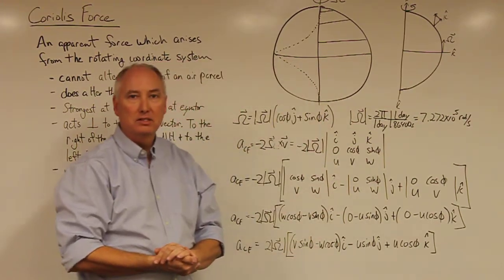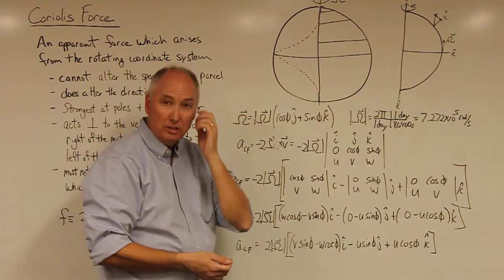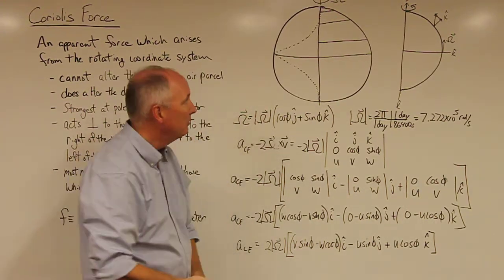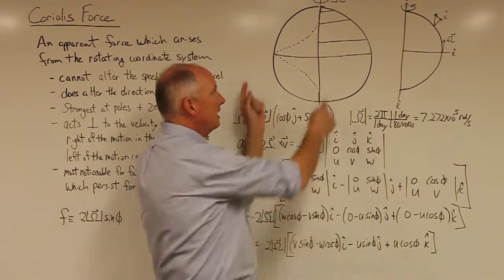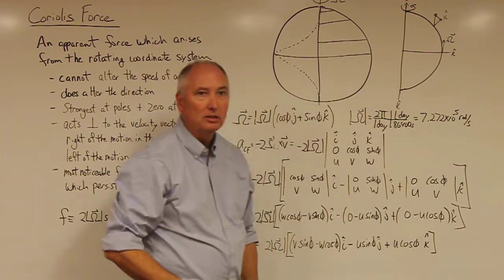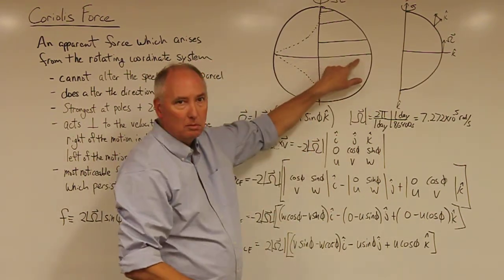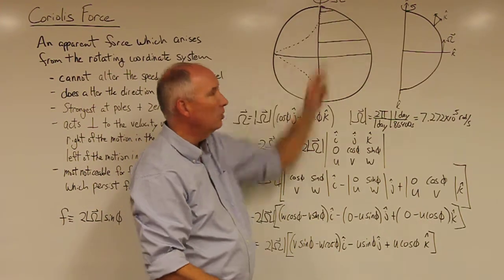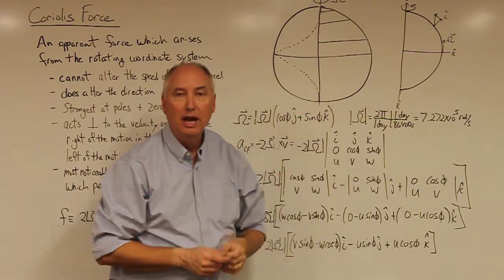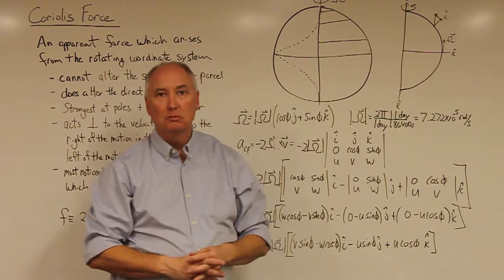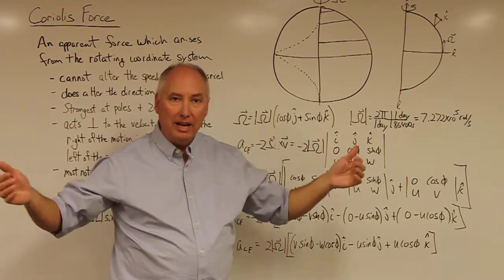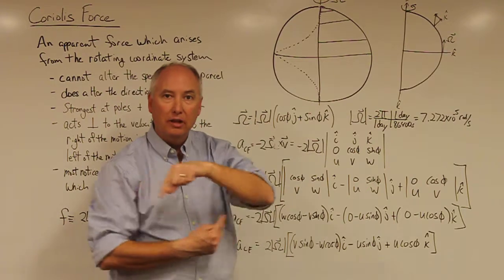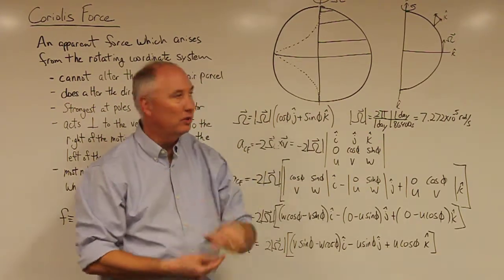Another way to think about this is through the conservation of angular momentum. So if you're at the equator, you have a very long radial arm. And then as you move from the equator towards the pole, that radial arm shrinks. And conservation of angular momentum would dictate that as that radial arm shrinks, the angular rotation rate actually increases.